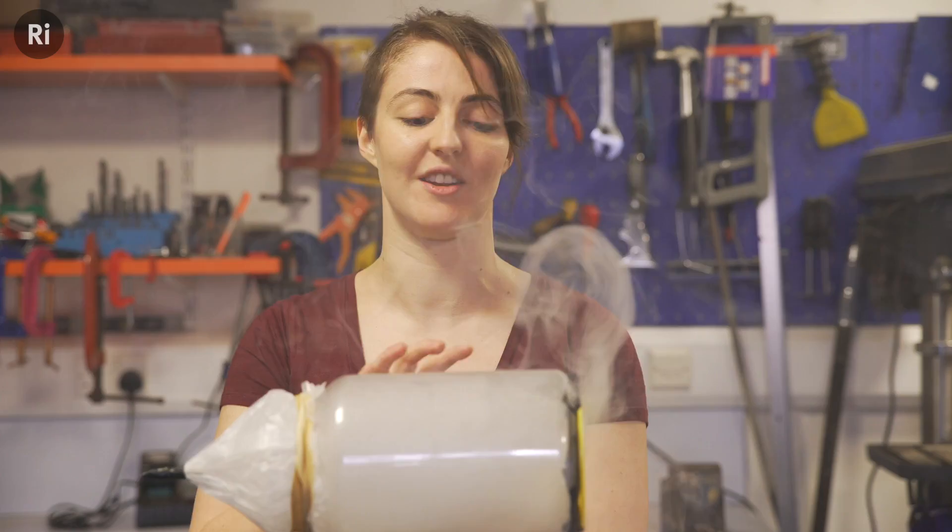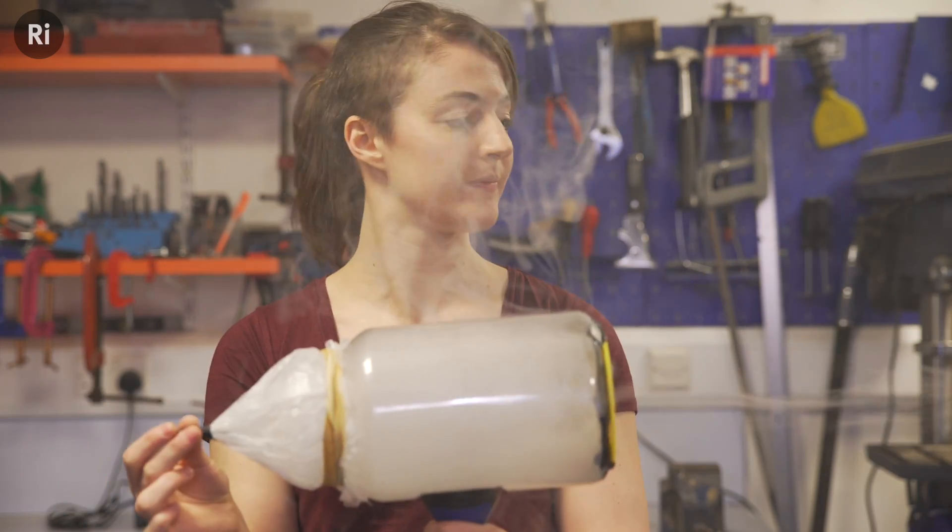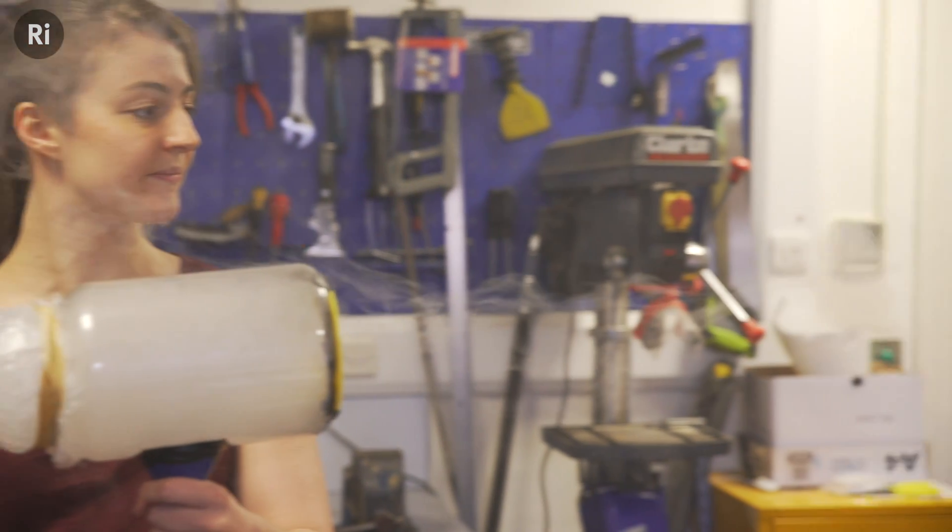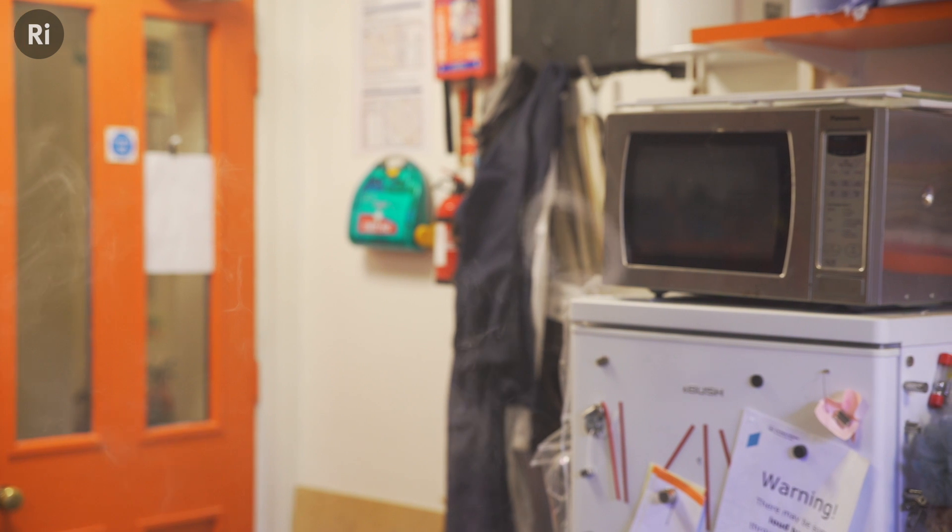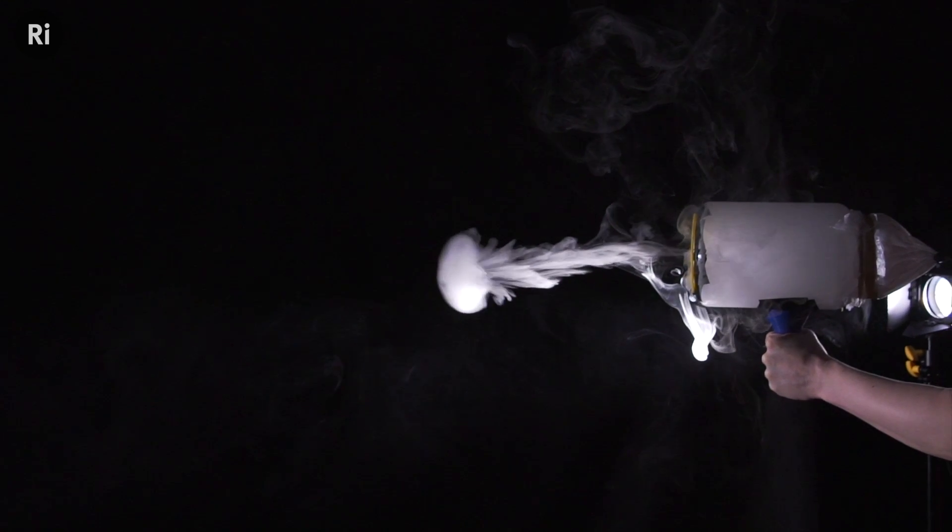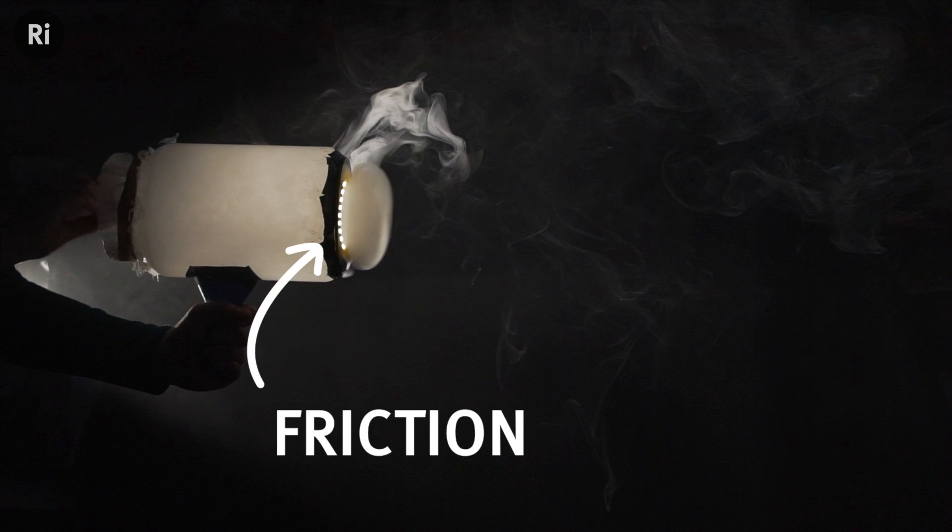When you fire a smoke ring you force the smoke from inside the cannon through the relatively still air of the room. To start with the smoke is basically a fast moving ball. As it emerges through the opening the smoke on the outside of the ball is being slowed down because of the friction between it and the edges of the hole.